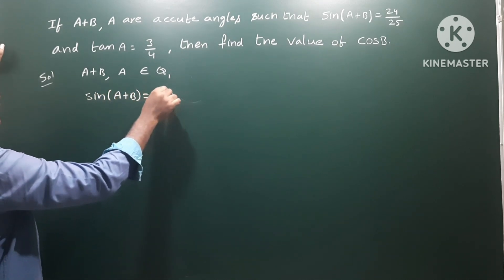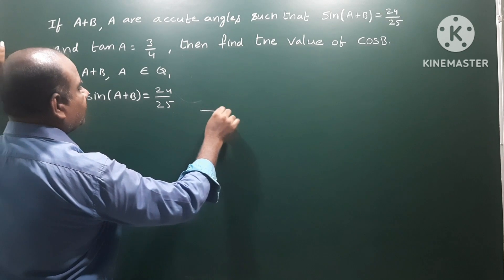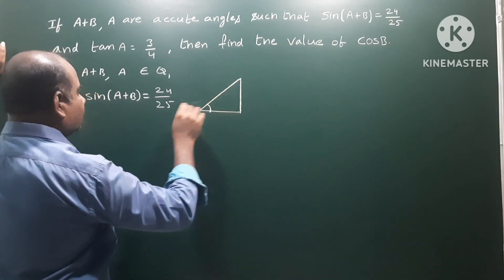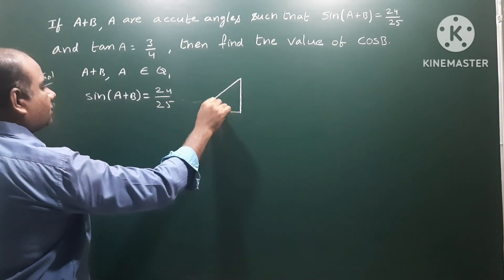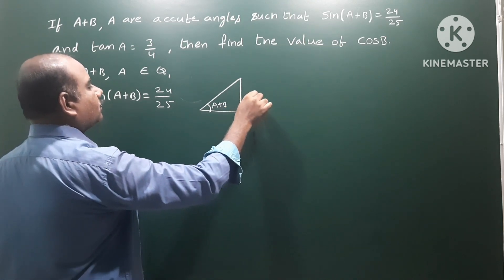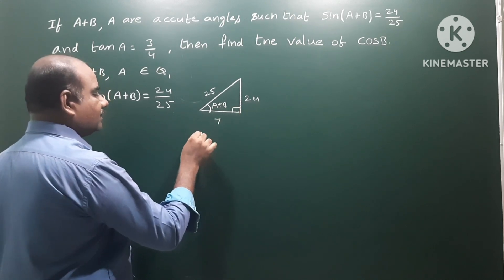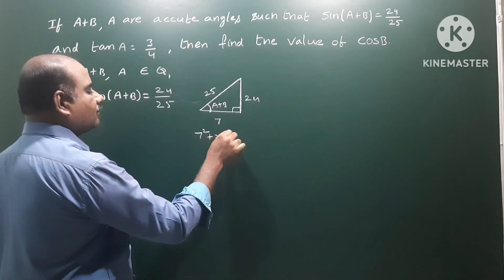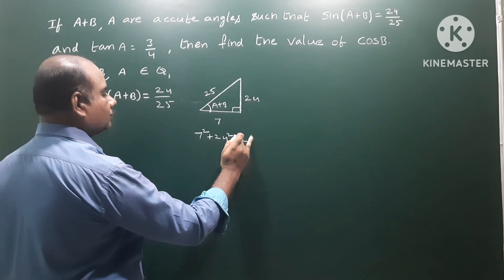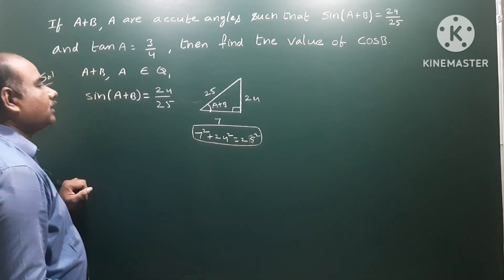Since sin(A+B) = 24/25, we draw a right angle triangle. The angle A+B gives sin(A+B) = opposite side by hypotenuse = 24/25. So the adjacent side is 7, since 7² + 24² = 25². These are the 7-24-25 Pythagorean triple values.